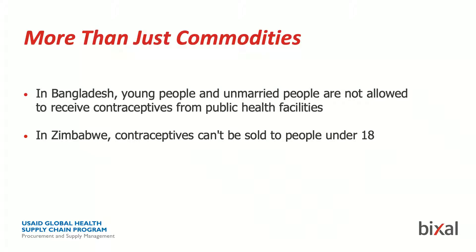Just having the commodities in-country isn't always enough — that's a really important theme, and why the work we did with this dashboard is so important. It might be the case that you have options in the country, but they're not always available to different people. For example, in Bangladesh, young people and unmarried people are not allowed to receive contraception from public health facilities. In Zimbabwe, contraceptives can't be sold to people under the age of 18. The commodities might be there, but they're not always accessible to especially vulnerable populations like youth.